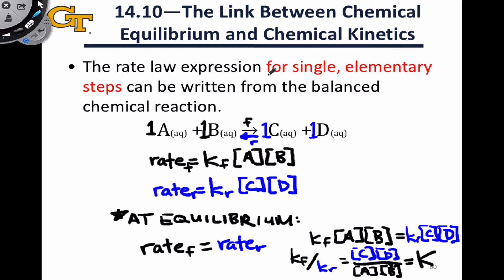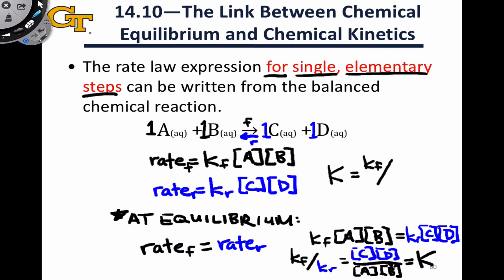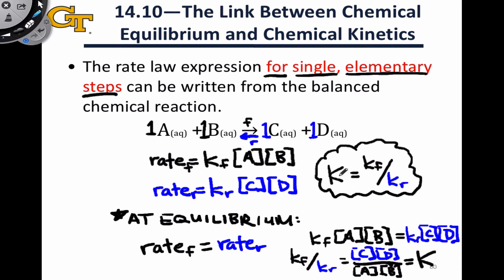What this shows us is that for a single elementary step — remember that was key, that allowed us to write the rate laws straight away without any experimental information just from the coefficients in the balanced chemical equation — for a single elementary step, we can write that the equilibrium constant, capital K or KEQ, is equal to the rate constant for the forward reaction divided by the rate constant for the reverse reaction. The great thing about this is that if we know the equilibrium constant and the rate of the forward reaction, we can immediately know the rate of the reverse reaction. It also helps us see how the balance of rate constants dictates the position of equilibrium.